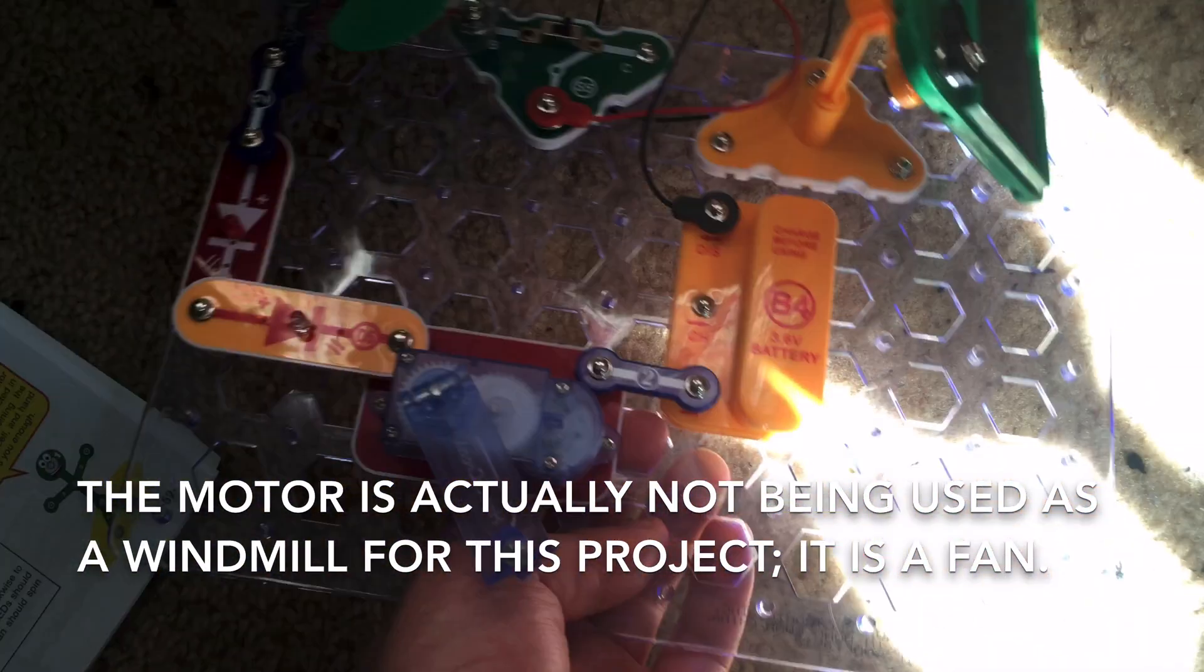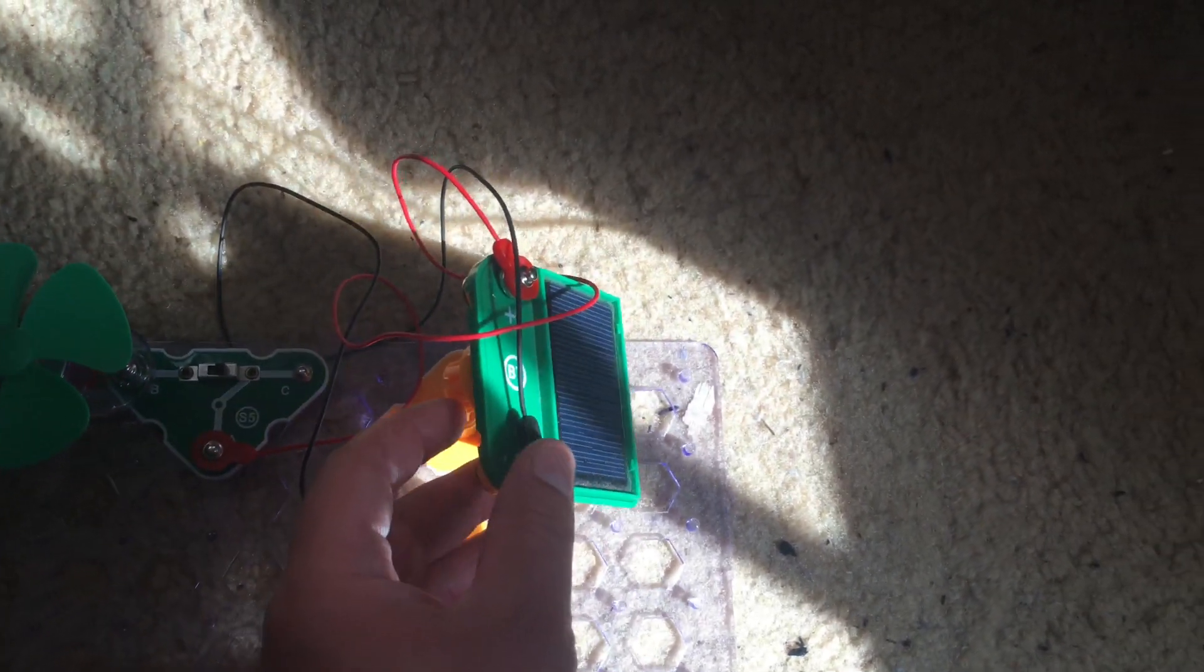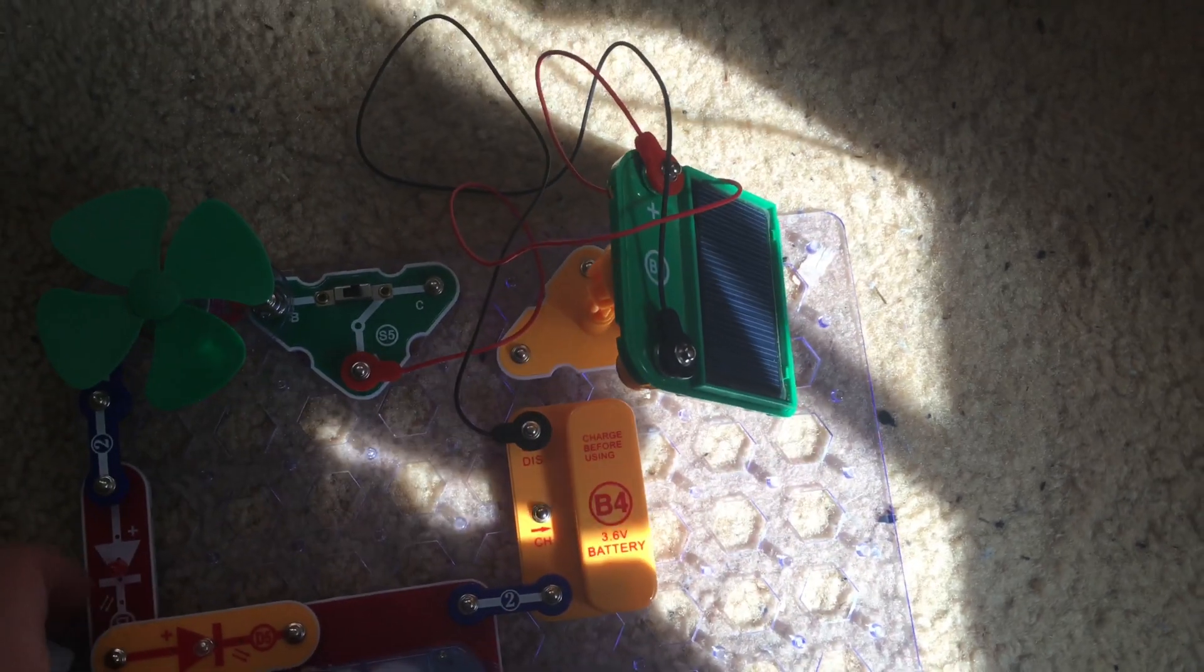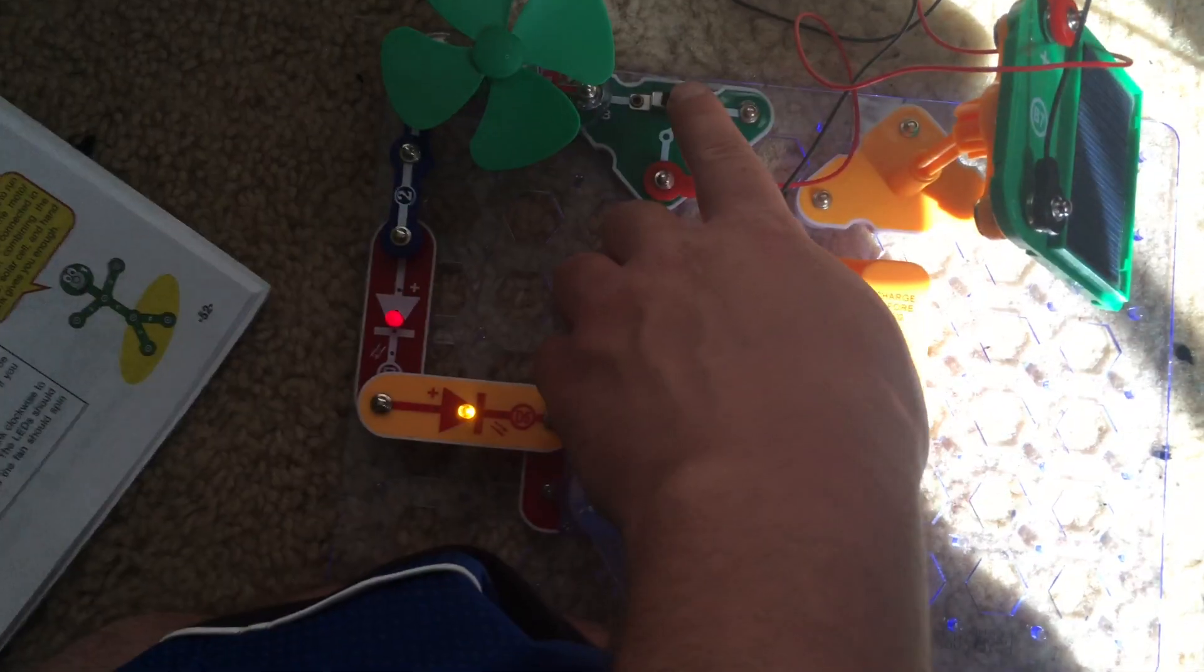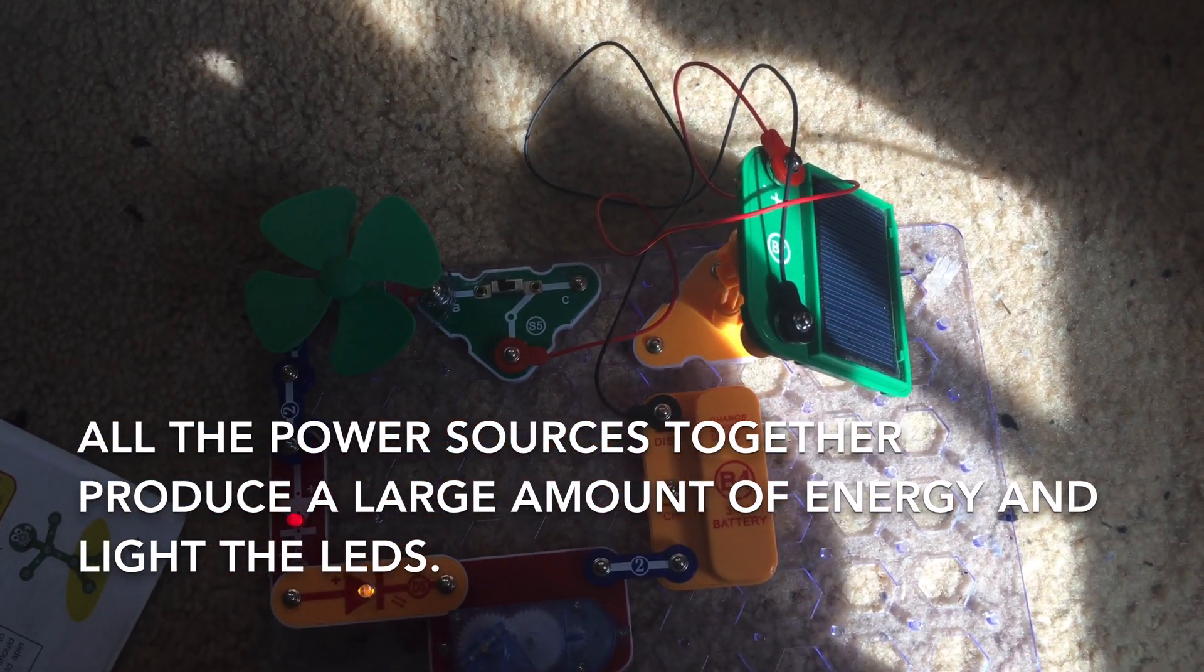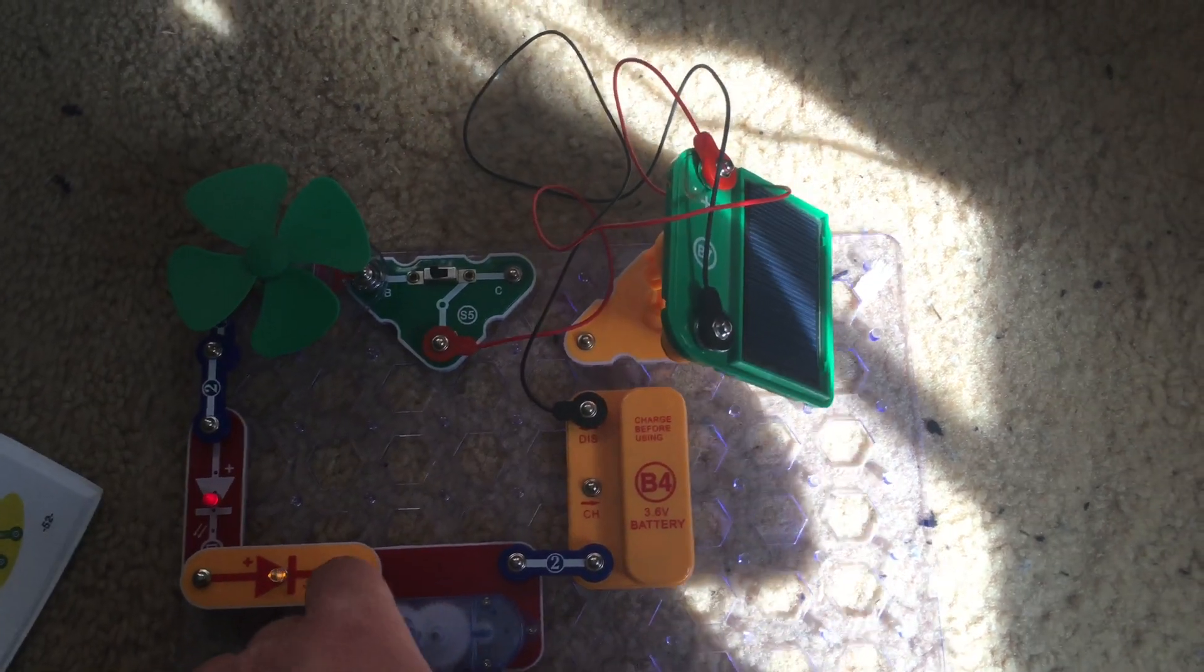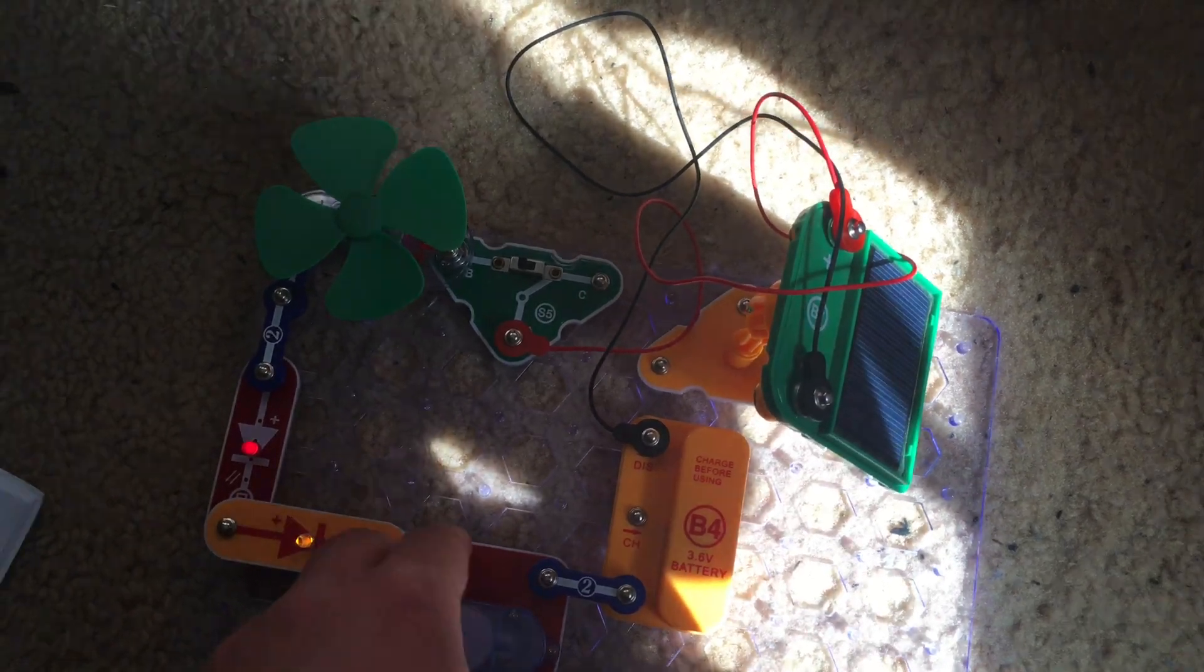And we have the two LEDs. Make sure that you are in a bright area where the solar cell can receive plenty of light from the sun, preferably, but if not, you can use an incandescent lamp. I am going to move the switch to the B position and the LEDs light up because there is a lot of power from all the sources that combine to power the LEDs.